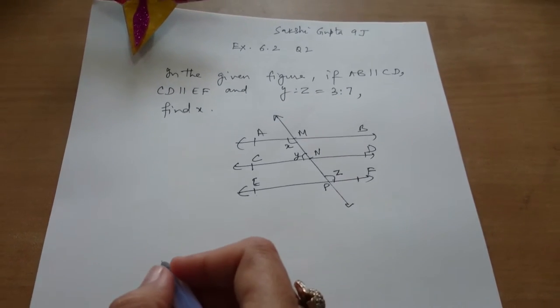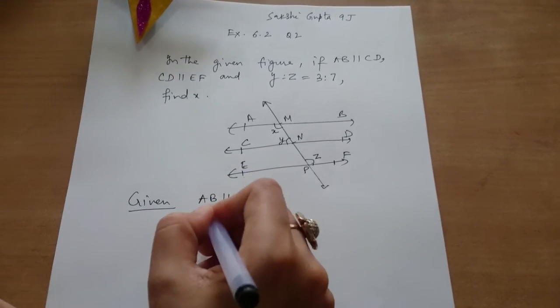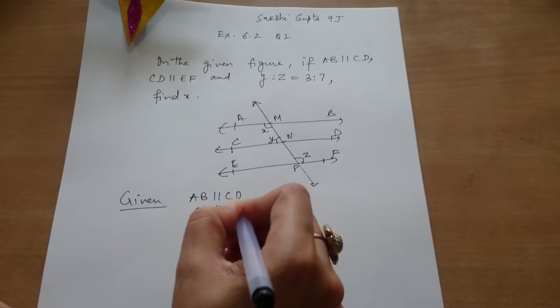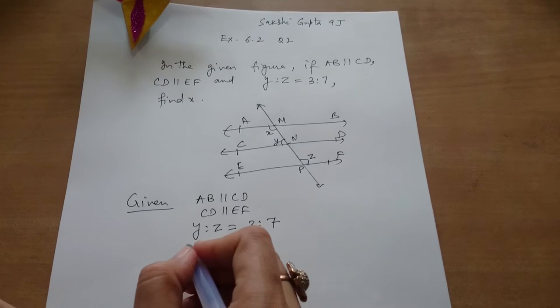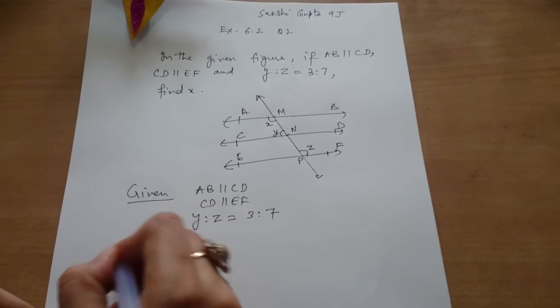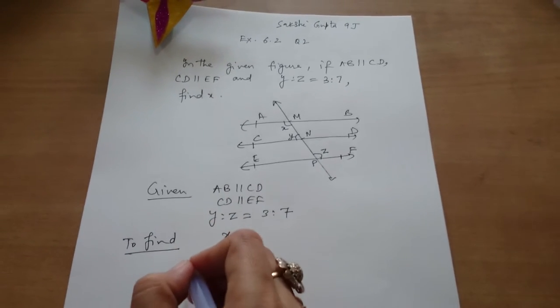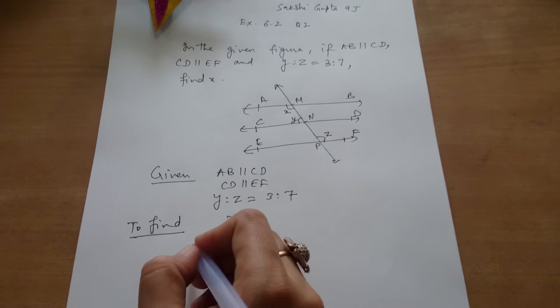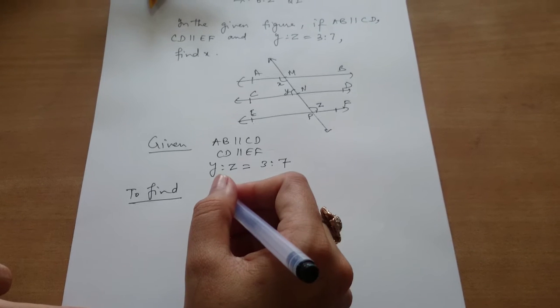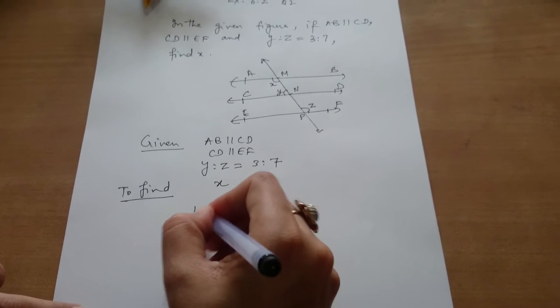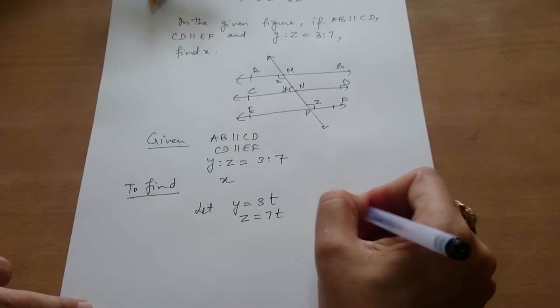Given AB is parallel to CD and CD is parallel to EF, Y ratio Z equals 3 ratio 7. We have to find the value of X. First, we let Y equal 3T and Z equal 7T, where T is the common factor.